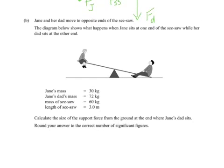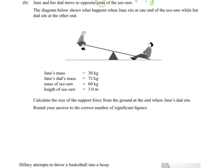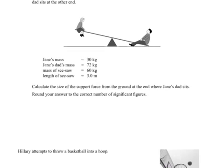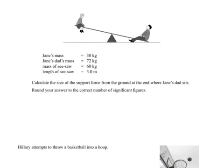Part B: Jane and her Dad move to opposite ends of the seesaw, so ends we're assuming that means they're exactly at opposite ends. The diagram below shows what happens when Jane sits at one end while the Dad sits at the other. These are the various masses and the lengths for the useful information. Calculate the size of the support force from the ground at the end where Jane's Dad sits. Round the answer to the correct number of significant figures.